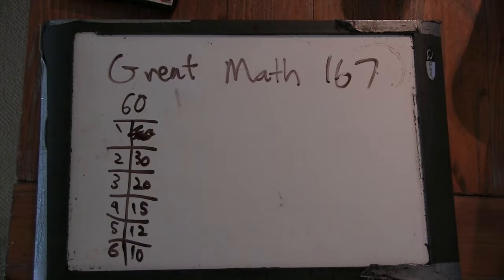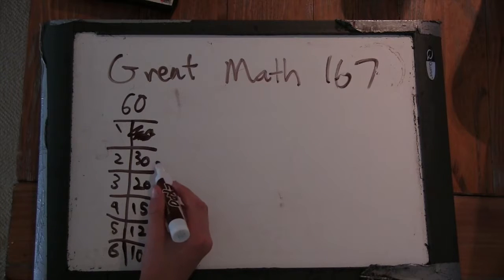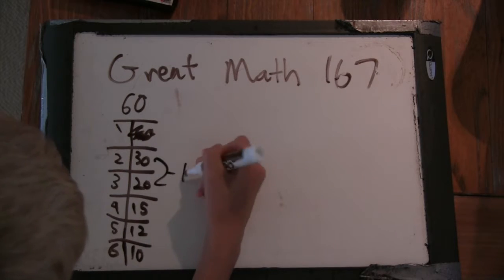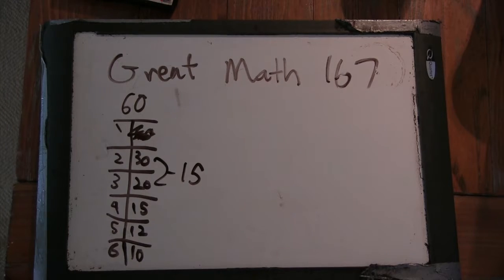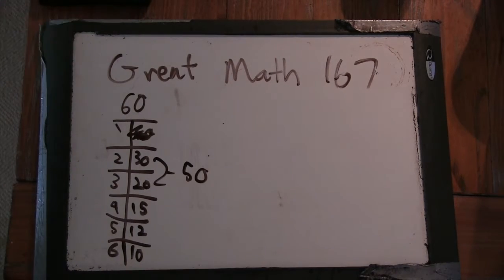Well, the bigger ones, these are the bigger ones. 30 plus 20, so this is 50. And plus 15 is already bigger than 60, 65.